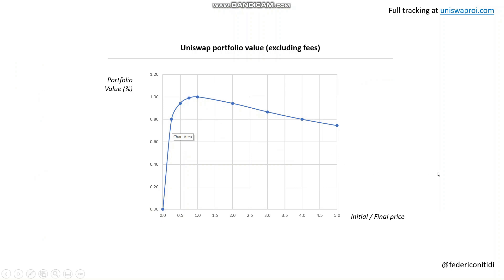So diving in, the first diagram I want to show you is probably one you've seen before — the usual way to represent the impermanent loss on Uniswap. This is essentially the portfolio value at the variation of the ratio between the price you invested versus the current price. If the price goes down or goes up, because of impermanent loss, the value of your portfolio always goes down. Now obviously with Uniswap you have fees, and fees are typically enough to provide a very good return on top of the impermanent loss.